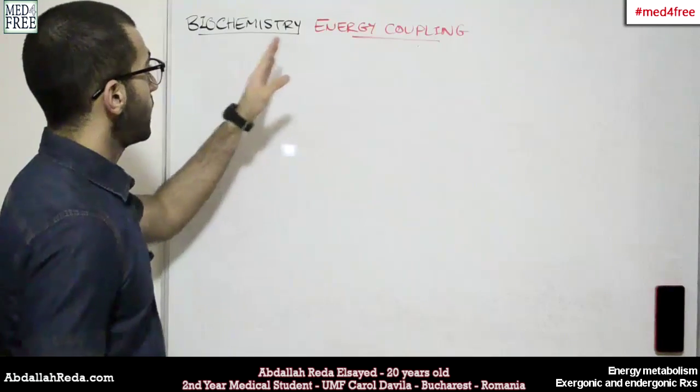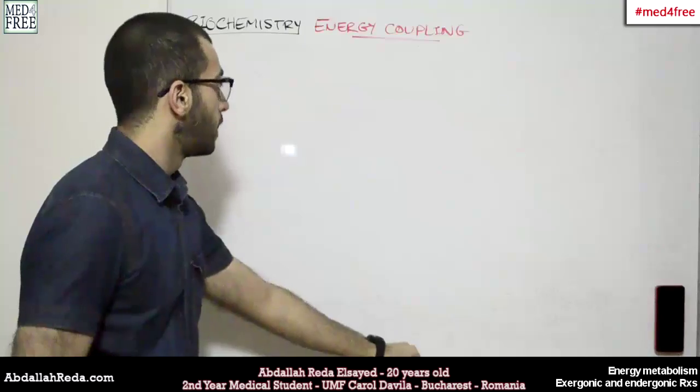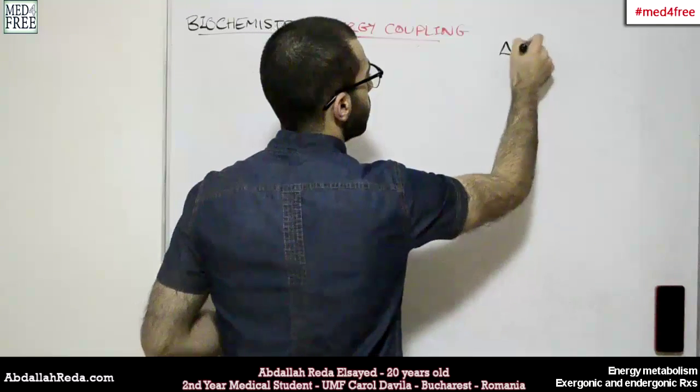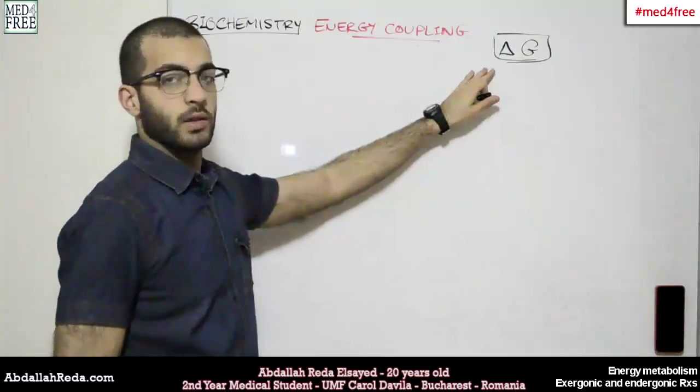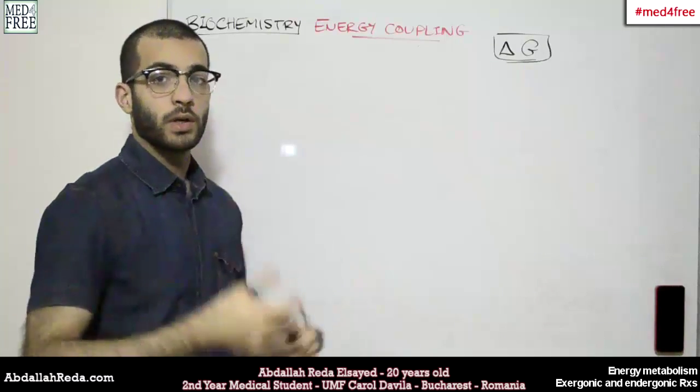This time we're going to talk about energy coupling. Last time we talked about the free energy which we denote as delta G. And we knew that we can use this value to determine whether the reaction is exergonic or endergonic.